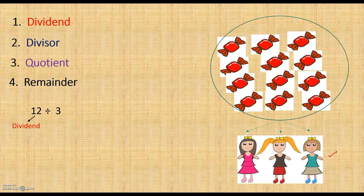We have a total of 12 chocolates, so this total number of chocolates is called the dividend. The dividend is the number or amount which we want to divide. And we want to divide these chocolates among three children, so this 3 is the divisor. The divisor is the number that divides another number — here, 3 is dividing 12, so this is called the divisor.